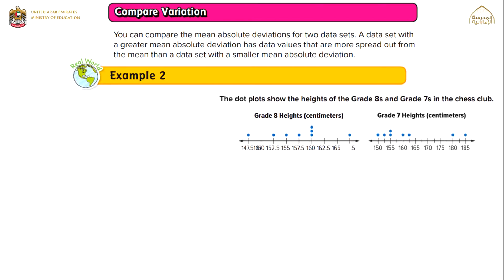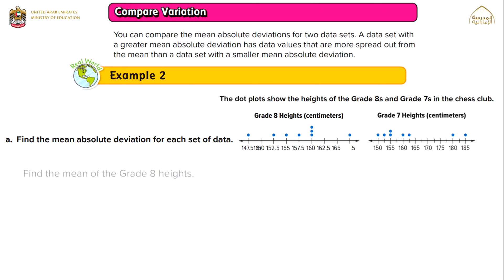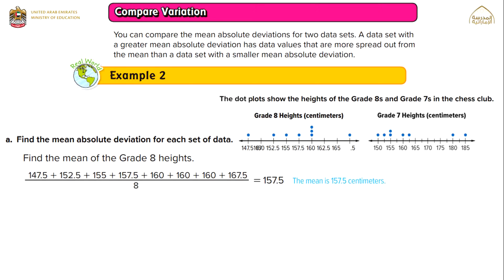Example 2. The dot plot shows the heights of grade 8 and grade 7 students in the class. Grade 8 height in centimeters and grade 7 height in centimeters are provided by a dot plot. Find the mean absolute deviation for each set of data. The mean of grade 8 heights is 157.5 centimeters.